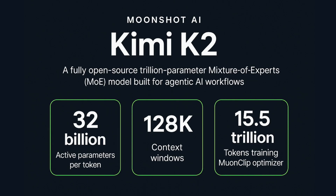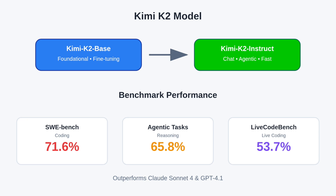It's trained on 15.5 trillion tokens using the Muon Clip Optimizer, which ensures training stability even at extreme scale. The model comes in two variants: Kimi K2 Base and Kimi K2 Instruct.